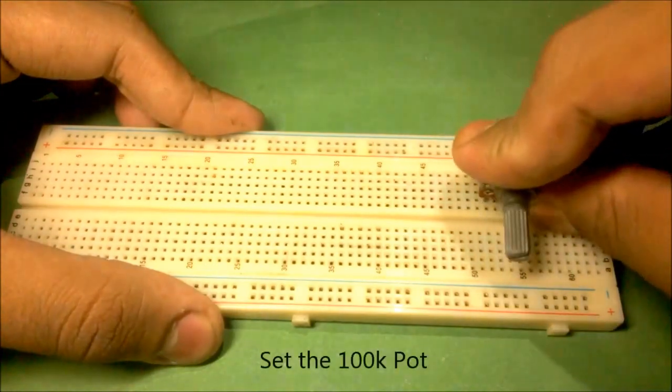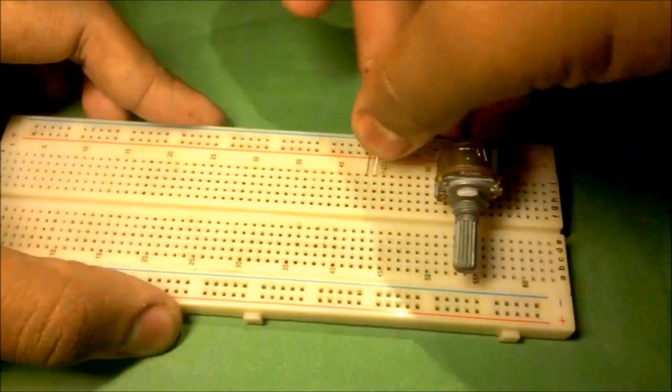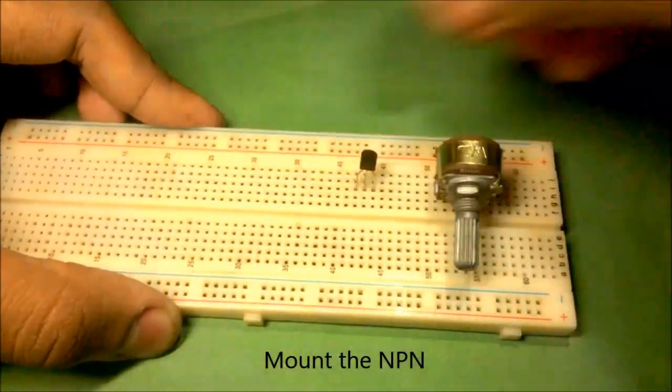Set the potentiometer on the breadboard. Now mount the BC547 NPN transistor.